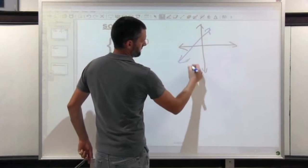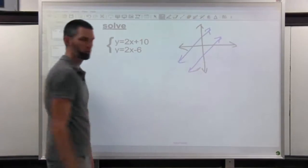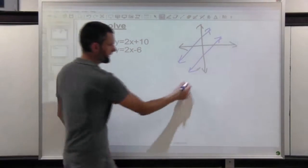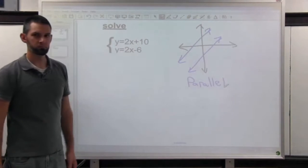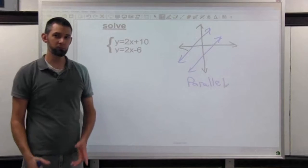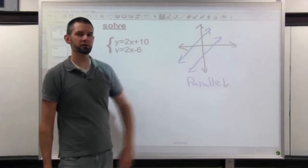That means those two lines are what? Right, they're parallel. And what are we always trying to find when we solve a system? We're trying to find where the two lines meet. Parallel lines are not going to meet.